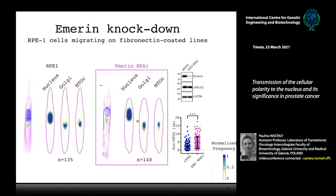I then performed emerin knockdowns to see the consequences on nuclear polarity. The first observation was that cell architecture was altered: in the absence of emerin, the leading edge of the cell was elongated, the Golgi was elongated, and the microtubule organizing center was more distant from the nucleus than in control cells.